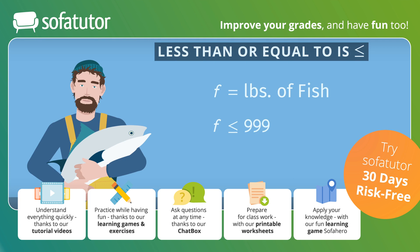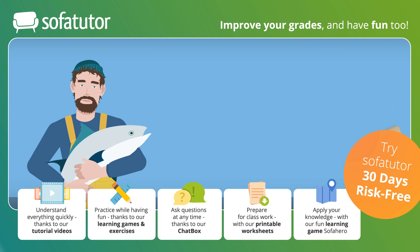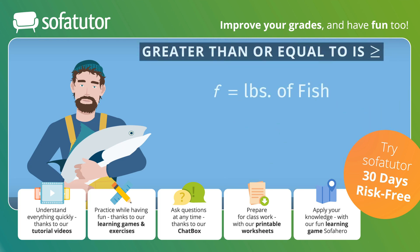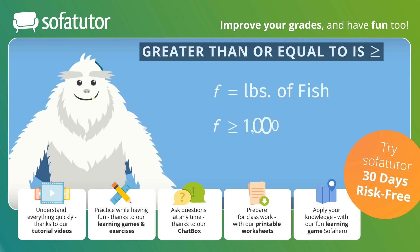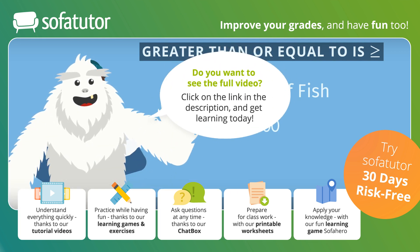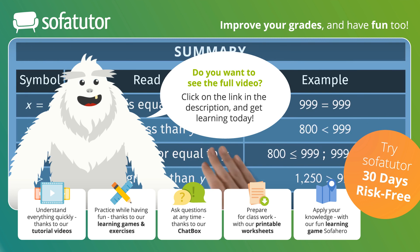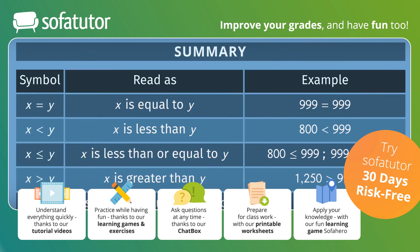Speaking of regulations, since catching 1,000 pounds of fish or more is totally not okay, is there another sign we could use? You betcha! If we combine the greater than sign with an equal sign, we get the greater than or equal to symbol. Now we have mathematical sentences that correctly describe the fishing regulations.